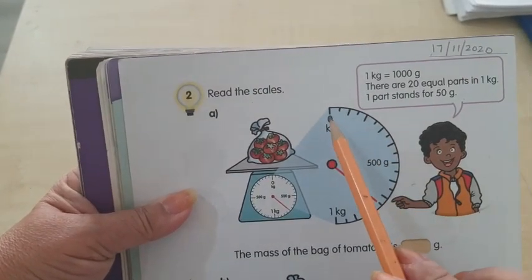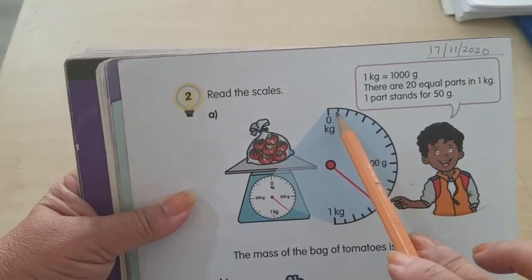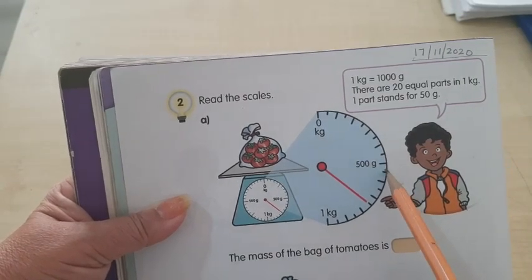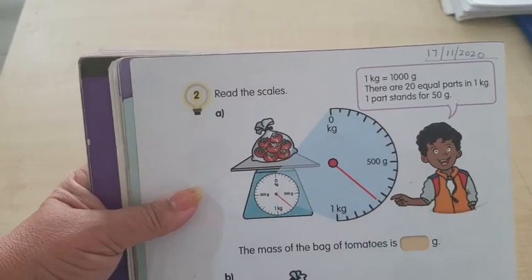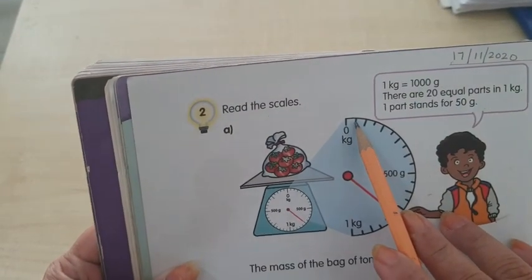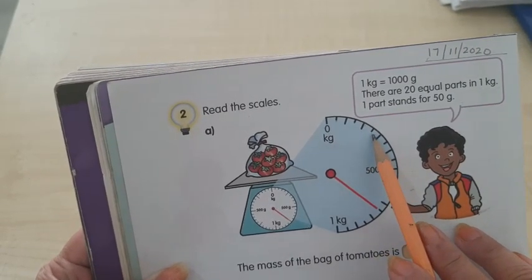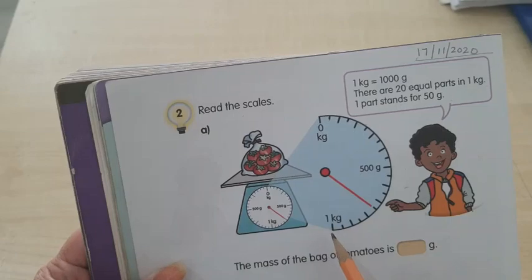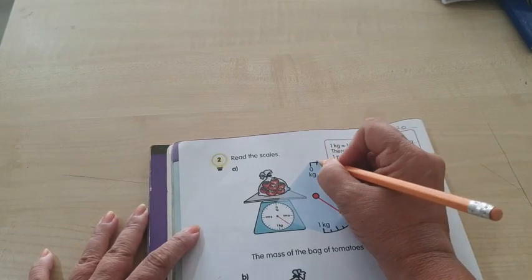This scale, from 0 to 1, there are 20 parts: 1, 2, 3, 4, 5, 6, 7, 8, 9, 10, 11, 12, 13, 14, 15, 16, 17, 18, 19, 20. So there are 20 parts. That means each part is 50 grams: 50, 100, 150, 200, 250, 300, 350, 400, 450, 500, and so on. You must count like that. Each part is 50.